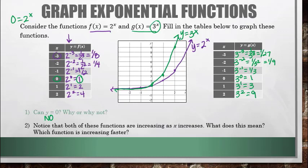Notice that both of these functions are increasing as x increases. As your x values get larger, your y values are also getting larger, and you can see that in both of these graphs. Which one is increasing faster? We can see that g of x, which is 3 to the x, is increasing at a faster rate. That's because the growth rate — which is our A value — is 3 versus 2.